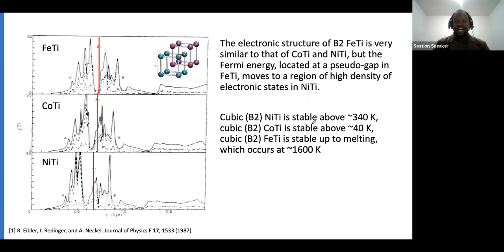The electronic structure of B2 iron titanium is very similar to cobalt titanium and nickel titanium. We show the existence of a pseudo-gap between the energy states of these materials, where in iron titanium, the Fermi energy is located at the pseudo-gap.